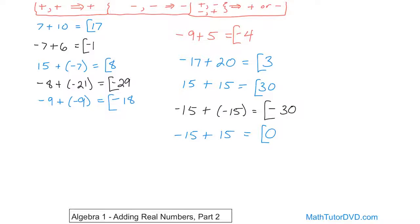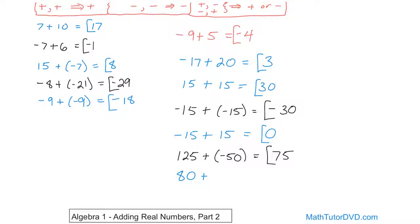What if we have 125 plus negative 50? You're adding mixed signs, so you always subtract the numbers. 125 minus 50 is 75, and then you look at the sign — positive 125 has the larger absolute value, so the answer is positive 75. Our final problem is 80 plus negative 90. Again, mixed signs, so subtract: 90 minus 80 gives you 10. The negative 90 has the larger absolute value, so the answer is negative 10.